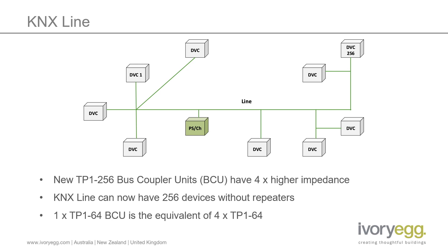Up until now, the limit has been 64 devices per segment, with line repeaters used to regenerate the telegrams. Three can be used to create a full line of 256 devices.